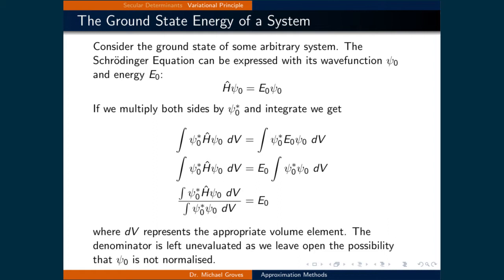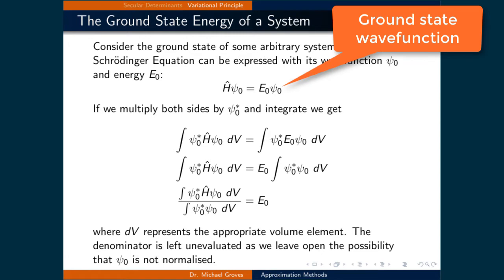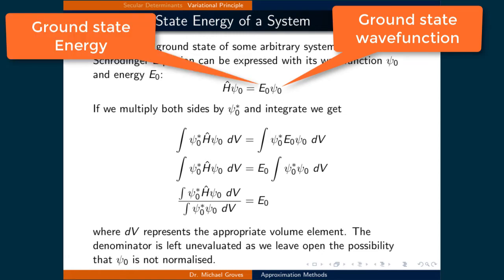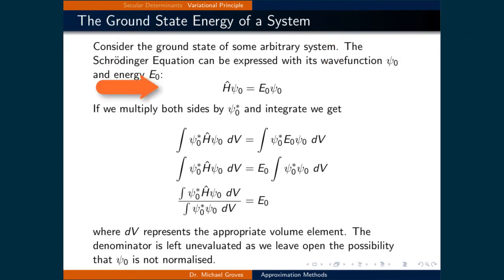This technique requires us to know how to calculate the energy of a system. For instance, take determining the ground state energy of some arbitrary system. The Schrödinger equation can be expressed with the ground state wave function, denoted as psi0, and the ground state energy, denoted as E0, such that the Hamiltonian times the ground state wave function is equal to the ground state energy times the ground state wave function.